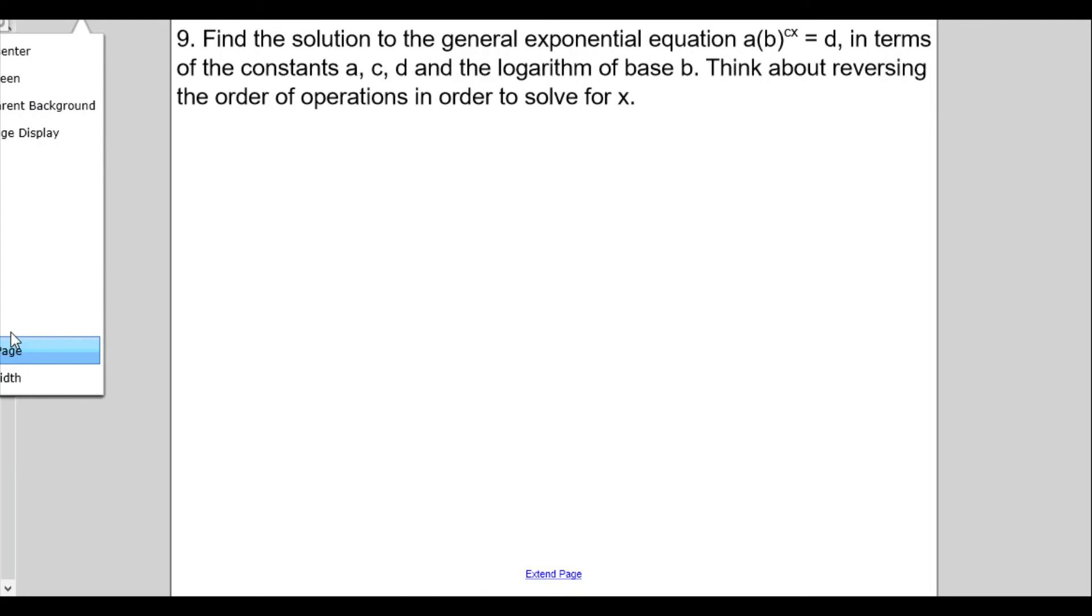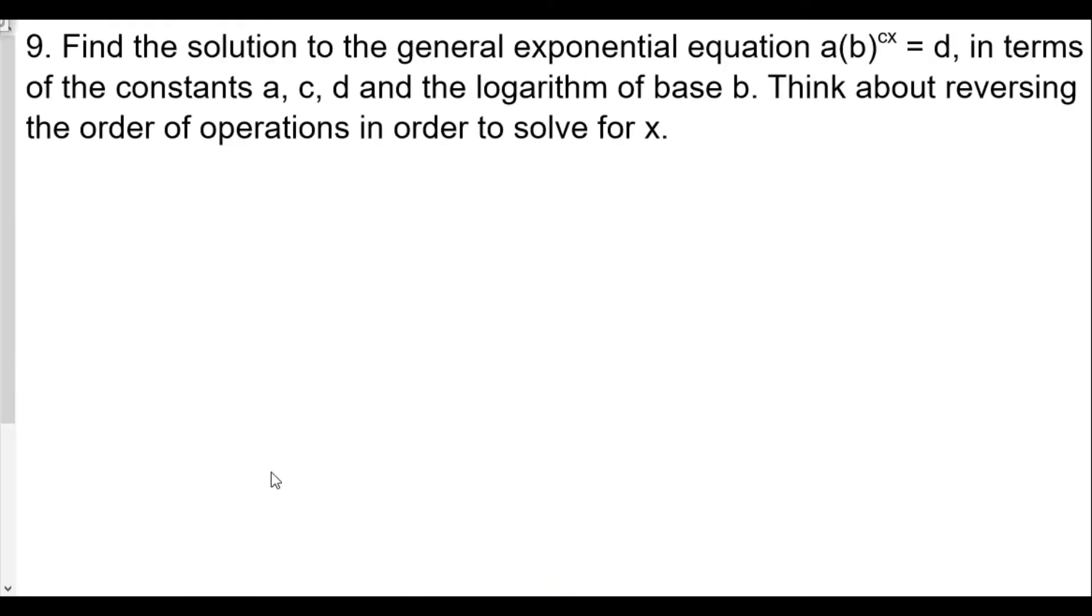Number 9: Find the solution to the general exponential equation a times b to the cx equals d in terms of the constants a, b, c, d, and the logarithm base b. Think about reversing the order of operations in order to solve for x.